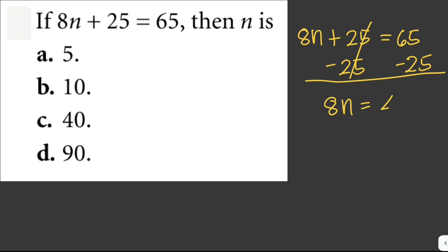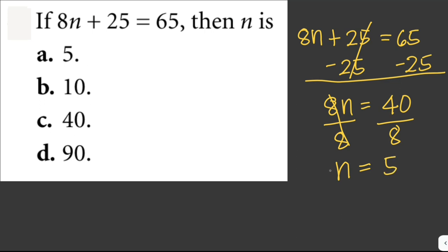65 minus 25 is equal to 40. Then we divide both sides by 8 to solve for n. So n equals 40 over 8, and 40 divided by 8 is equal to 5. The value of n is equal to 5. The answer here is letter A.